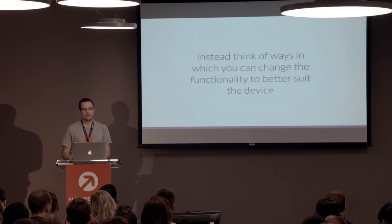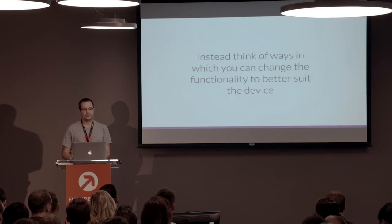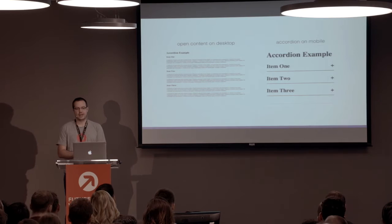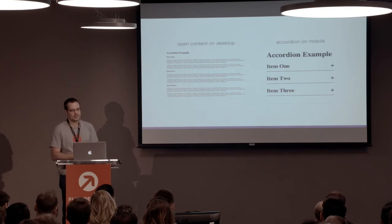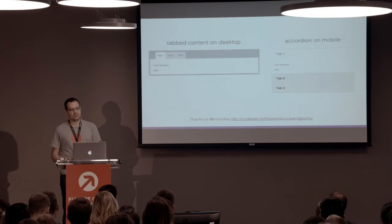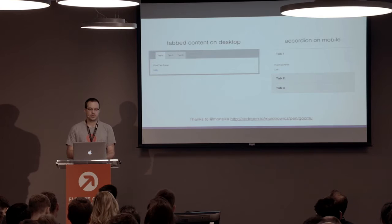Instead of simply removing content, we should think about how we can change the functionality to better suit the device. A perfect example would be a list of FAQs — on a small display, it would be really hard to find the relevant question. Instead, we can collapse it into an accordion, so just the questions are visible and the user can find answers much quicker. Another example is tab content on desktop — tabs can have quite long titles which, when next to each other on small devices, wouldn't fit. So instead, they can be turned into an accordion, allowing the titles to be displayed fully.